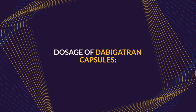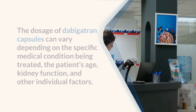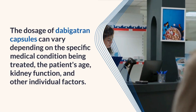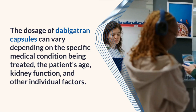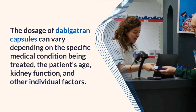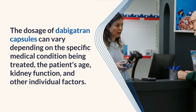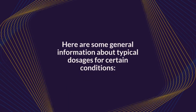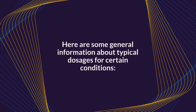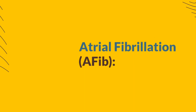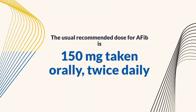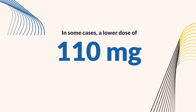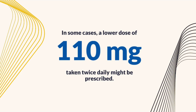Dosage of dabigatran capsule. The dosage of dabigatran capsules can vary depending on the specific medical condition being treated, the patient's age, kidney function, and other individual factors. For atrial fibrillation, the usual recommended dose is 150 mg taken orally twice daily. In some cases, a lower dose of 110 mg taken twice daily might be prescribed.